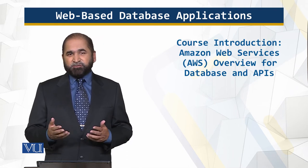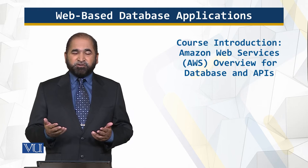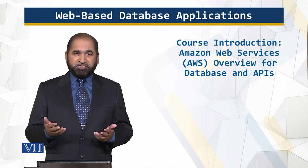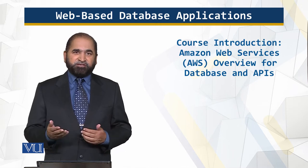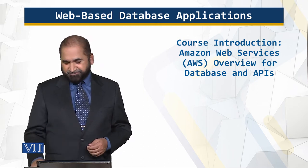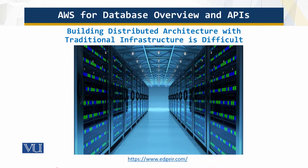I'll talk about the databases with reference to the storage, because that was the key facility and feature that Amazon offered, and then about the Application Programming Interfaces. So, traditionally, after the standard databases, the approach was to have a distributed architecture — distributed databases. Now, using the traditional infrastructure, creating such distributed databases was a challenge and it has certain issues also.